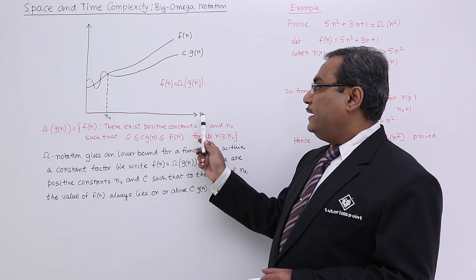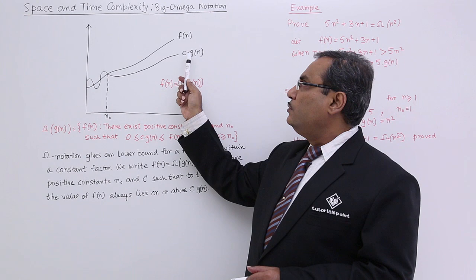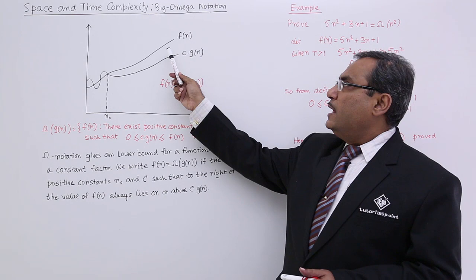But when the value of n is greater than equal to n0, from that very particular point, you are finding that c into g of n is always denoting the lower bound of f of n. This is denoting the lower bound.